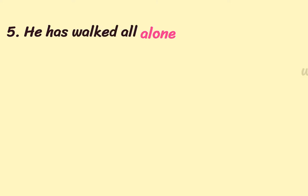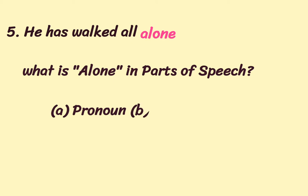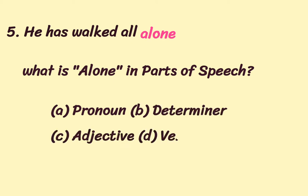The fifth sentence is 'He has walked all alone.' What is 'alone' in parts of speech? Alone is actually an adjective. Almost all adjectives beginning with 'a' are used in predicative position — you cannot use them in attributive position, meaning you cannot place them in front of a noun. They are only used in predicative form. So 'alone' in this sentence has a predicative position and is an adjective.